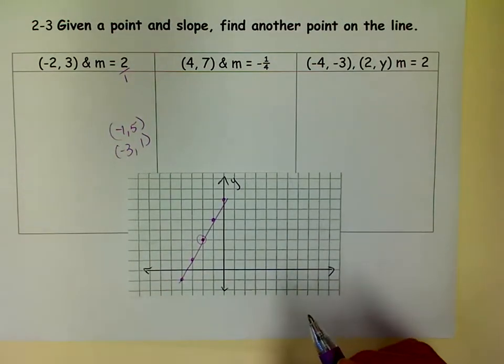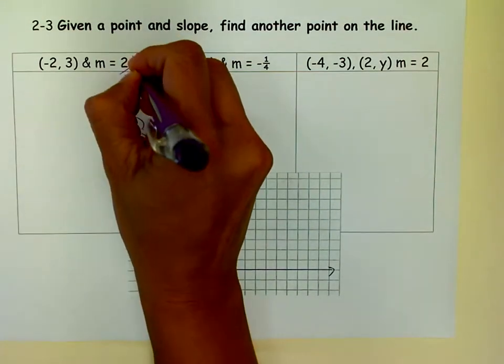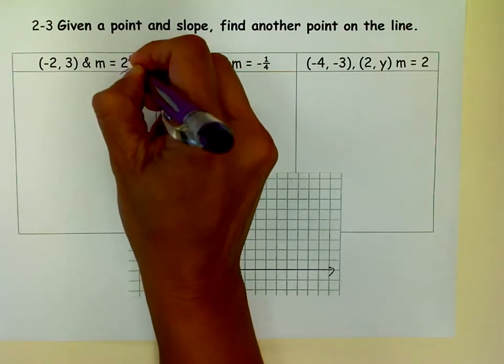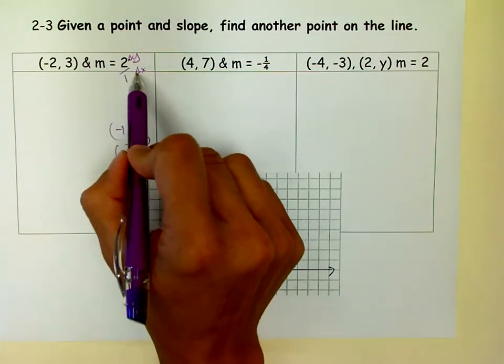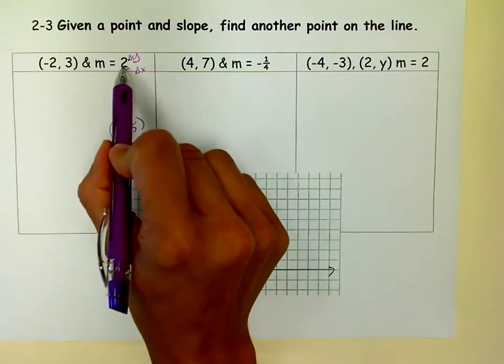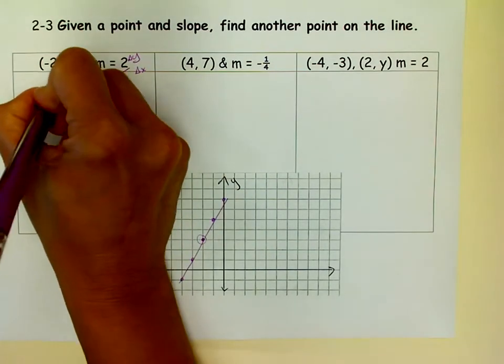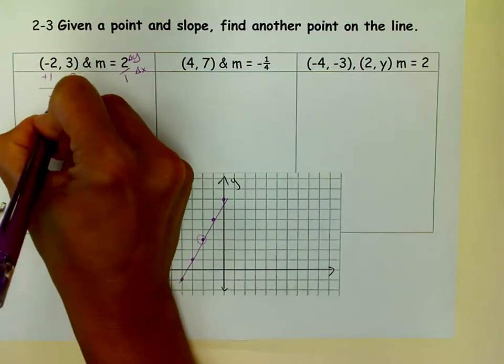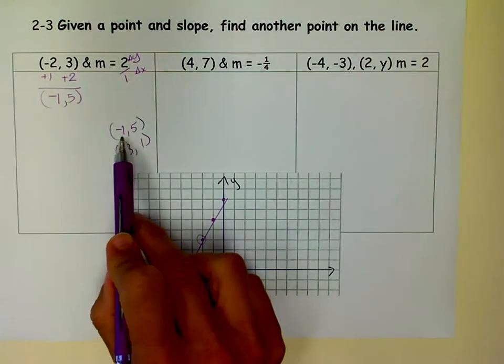But let's say you didn't have a piece of graph paper handy. You can still do the problem. What you need to remember is that this deals with, the top of the slope deals with y's, the change in y, and the bottom of the slope deals with the change in x. That's what that little delta means. It's the change in y, that triangle. We say that delta y, or the change in y, over the change in x. So what I want to do is I want to add 2 to my y-coordinate, and I want to add 1 to my x-coordinate. So if I do that, I can find another point on my line. Negative 2 plus 1 is negative 1. 3 plus 2 is 5.